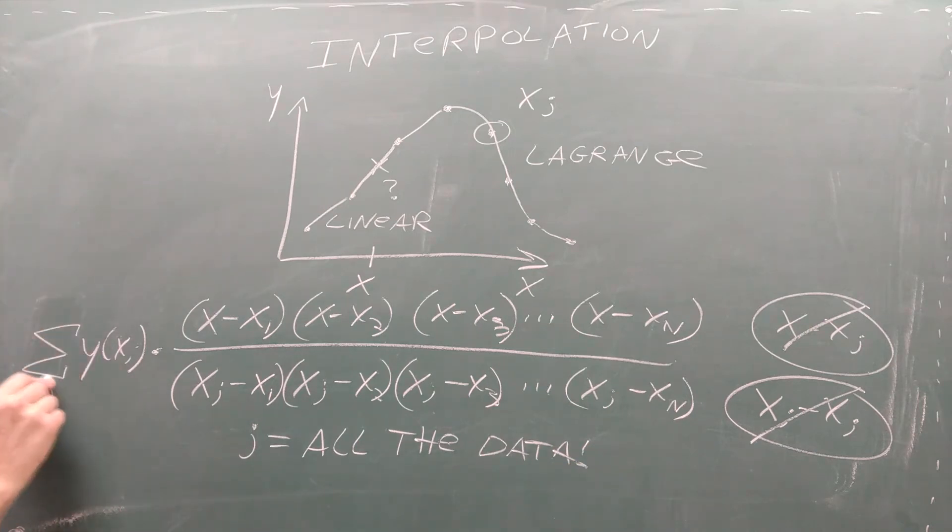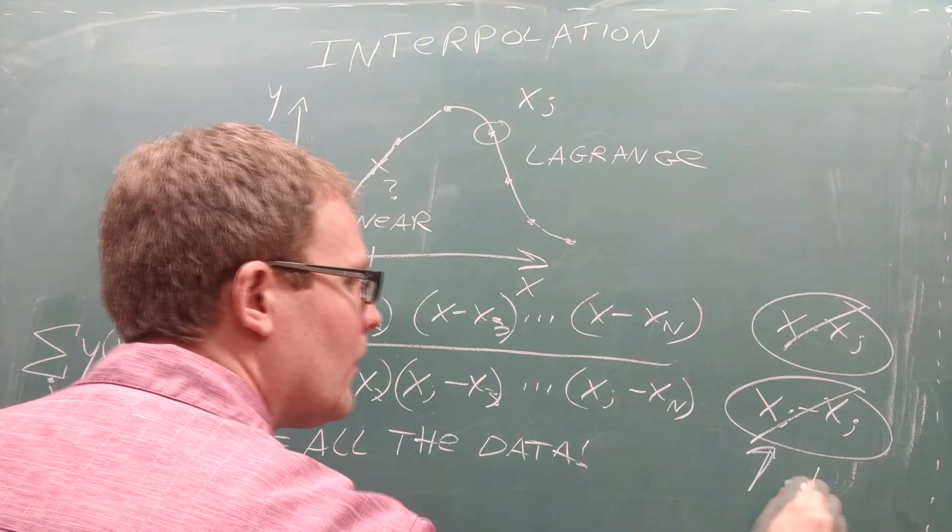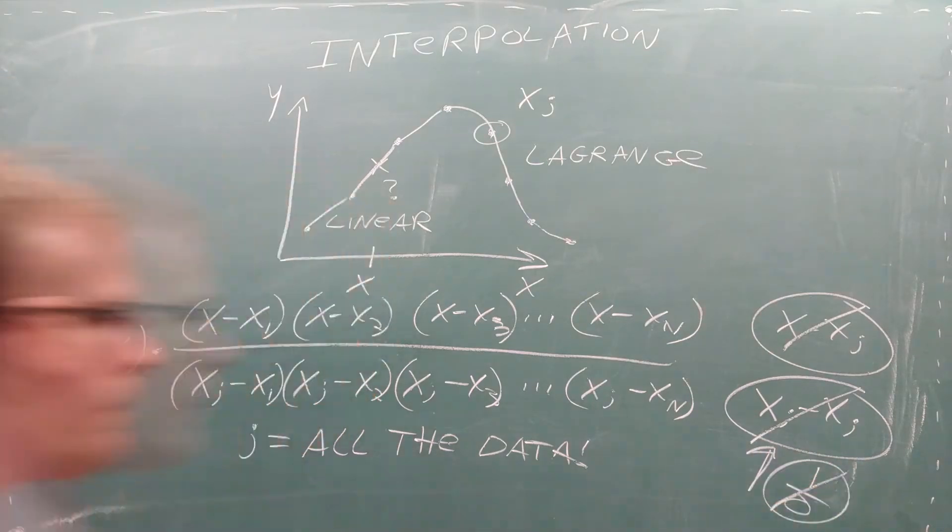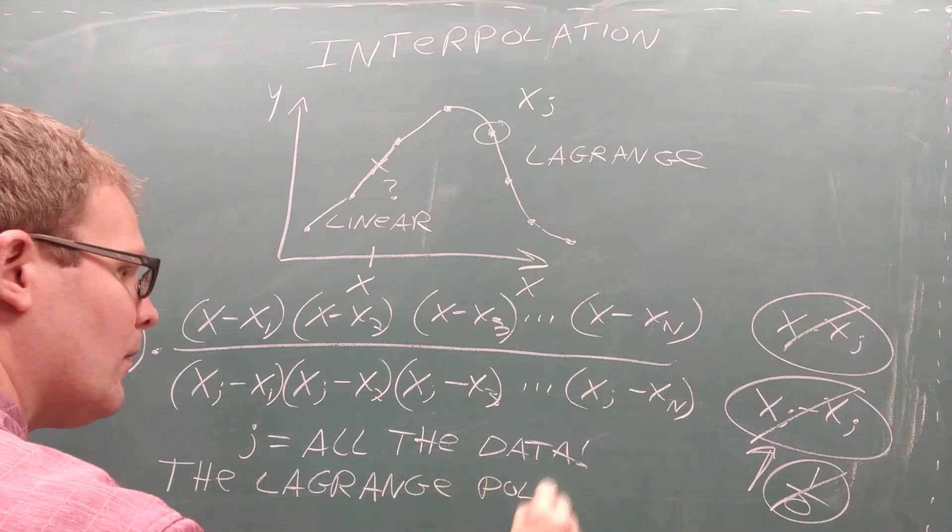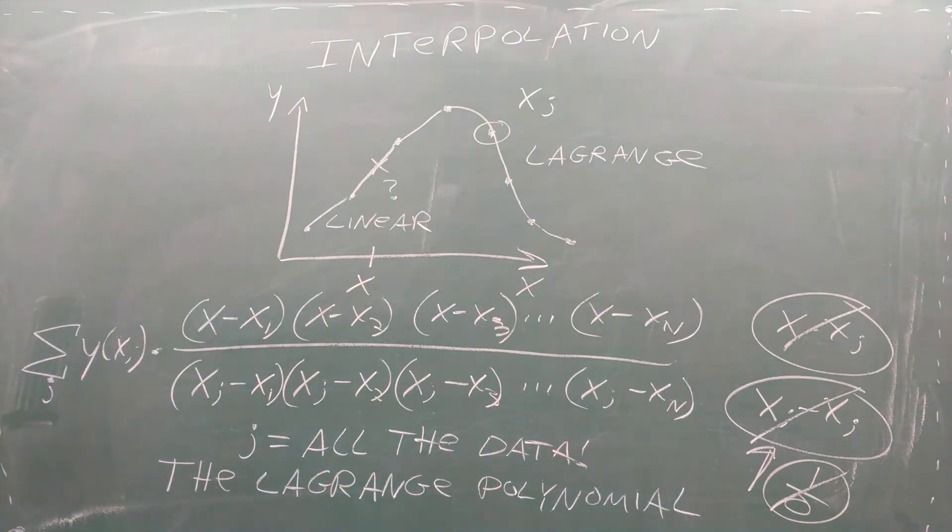This is a complicated formula and it's just one of many terms in our polynomial. The good news is we obtain the others by taking a sum over j. Again the only trick is to avoid subtracting by xj, otherwise we would divide by zero. The result is something called the Lagrange polynomial, which has some very special properties that we'll see in a moment.